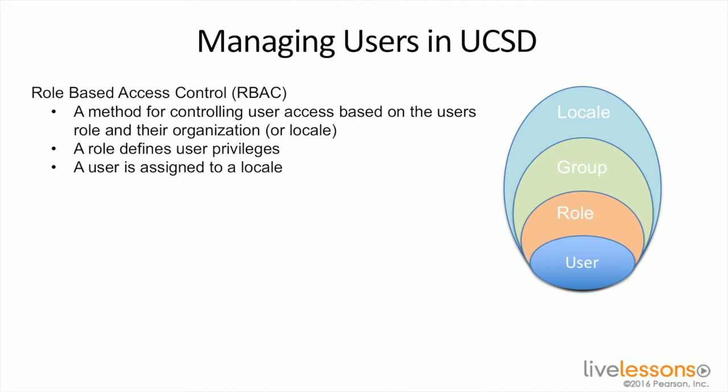This determines access separation — for example, if you've got Coke and Pepsi as two different customers, being with Coke means you don't get access to Pepsi. That determines your locale. In addition, you also have the ability to assign a user to a group. A group can give specific privileges in addition to what you would have with your role.